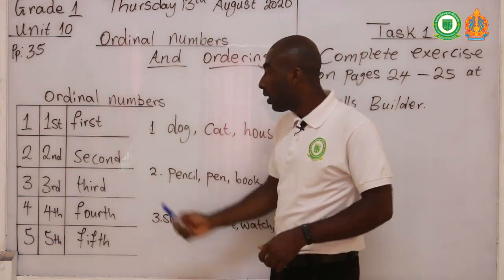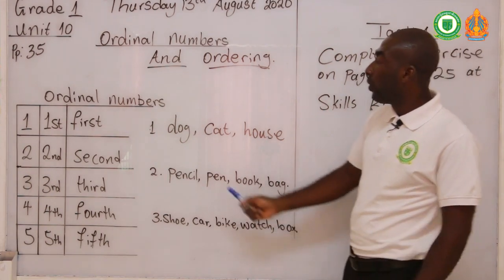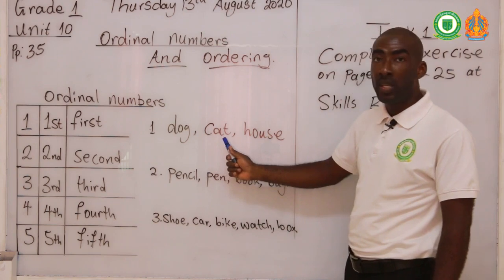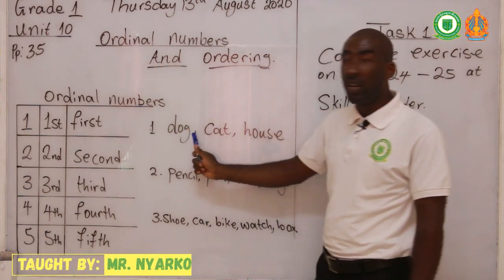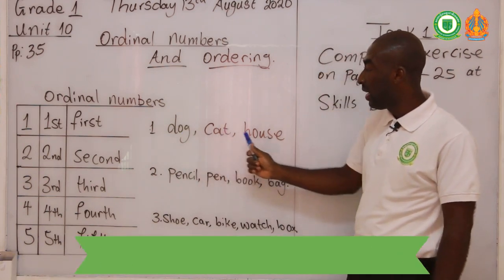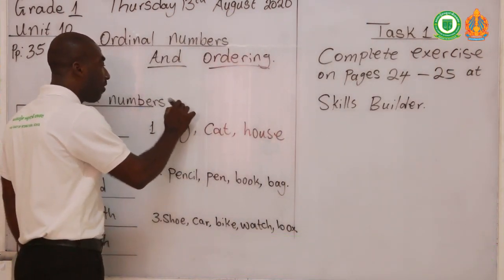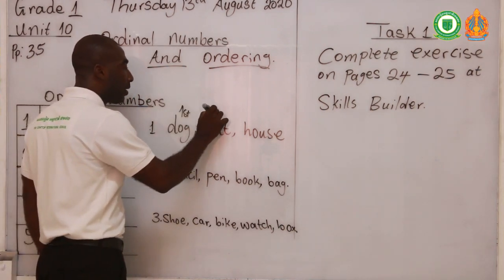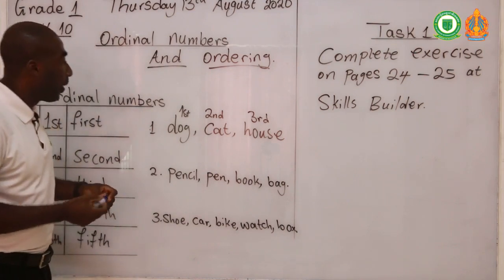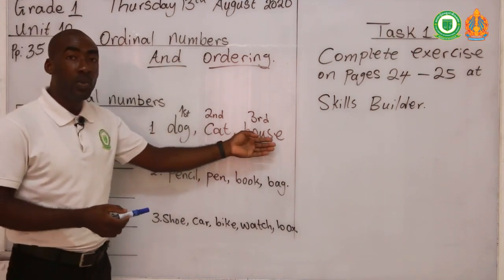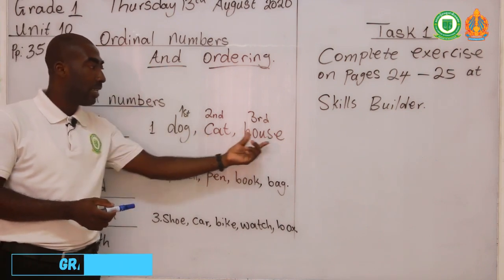Let's say we have this list of items. We have dog, cat, and house. Because we wrote dog first before cat and house, dog becomes the first on the list. So dog is first, cat is second, and house becomes third. If we are to give them numbers, dog is first, cat becomes second, and house becomes third. The position of these items tells us which ordinal numbers they belong to — first, second, and third.